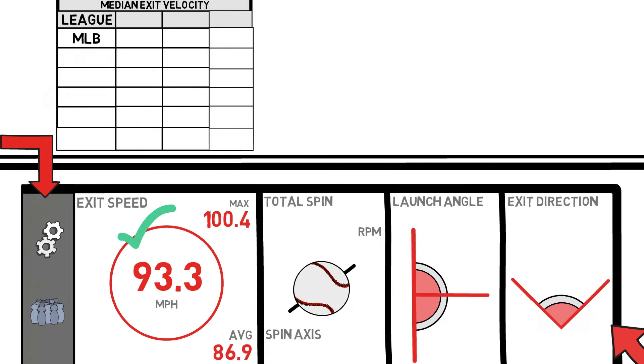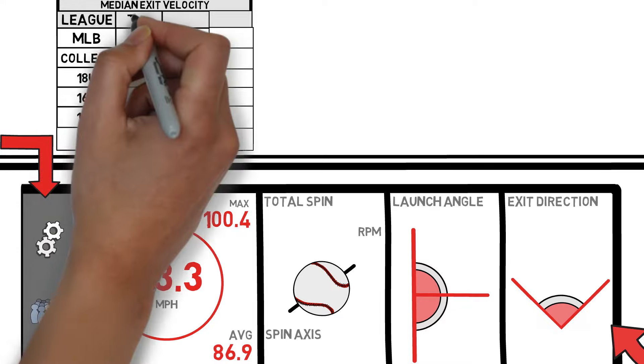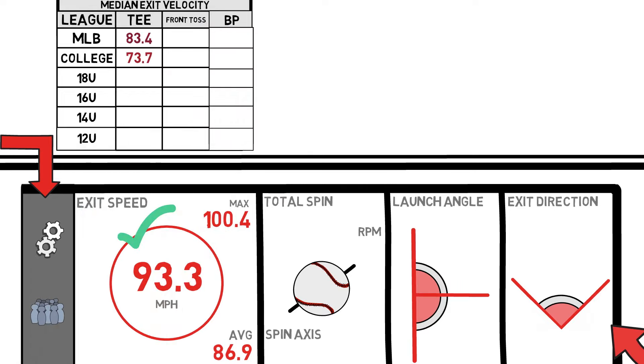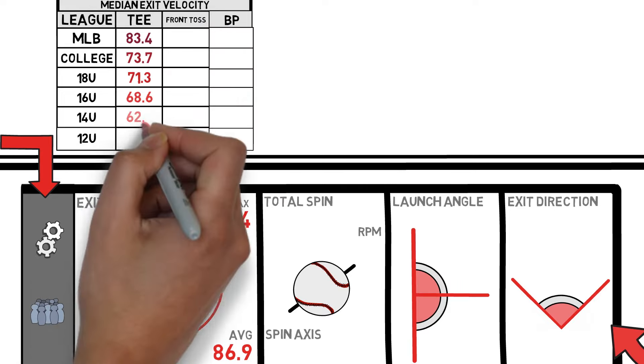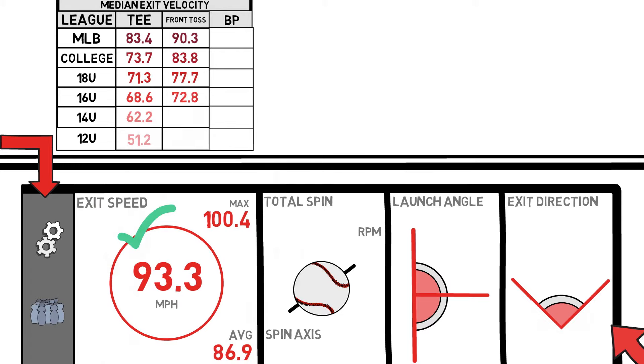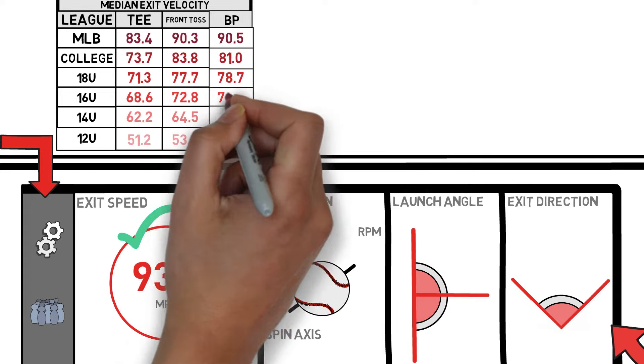To give you a little more information, Rapsodo has provided the median exit velocity numbers they see throughout different levels of play in different drills to give you a baseline. As always, links to that information are in the description down below. This is a super helpful chart to refer to as you dive deeper into analyzing athletes for the first time using this device.